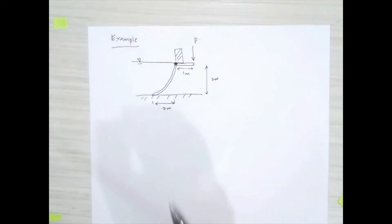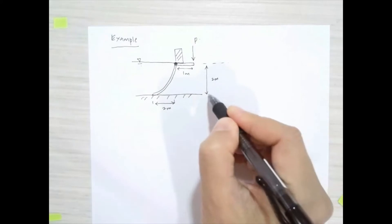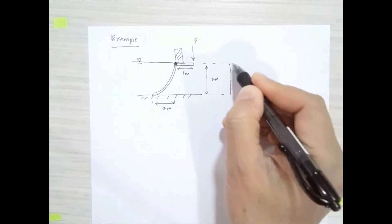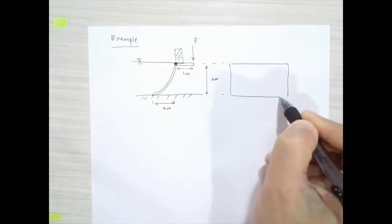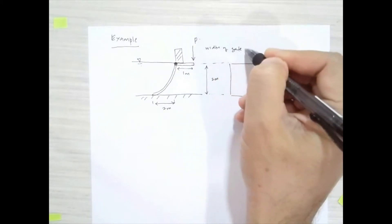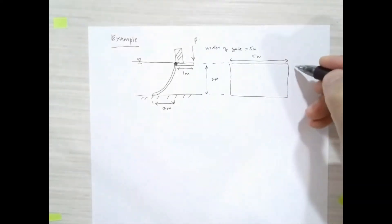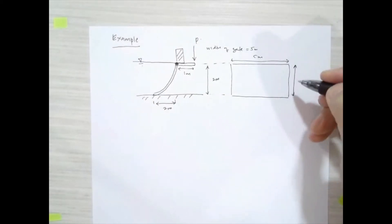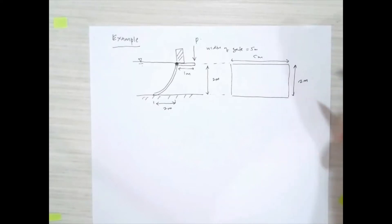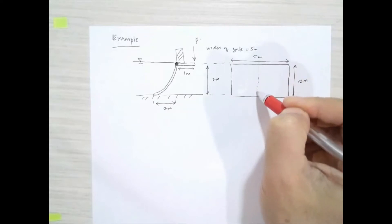To solve these problems, the first step is to project this curved surface onto a vertical plane. If we project this curved surface we will get a rectangle. The width of the gate is equal to 5 meters, so the width of the rectangle is 5 meters and the height of this rectangle is 2 meters.